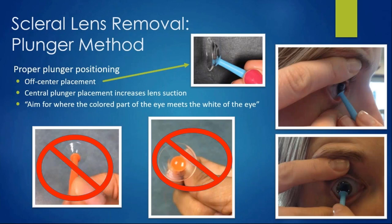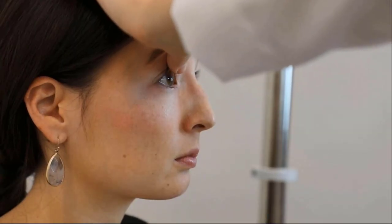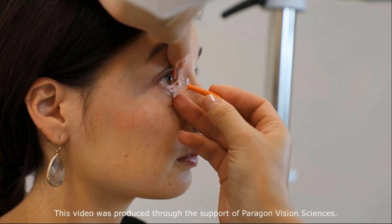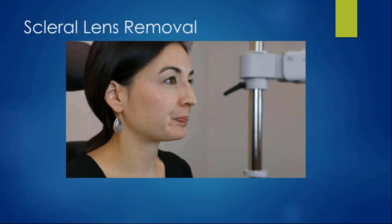For lens removal, the biggest mistake is going right in the center of the lens. Always do off-center placement. Wet the small removal plunger tip with saline such as Unique pH or whatever you're using. Go right to the edge of the lens, around four to six o'clock at the bottom. Press slightly in, wiggle, and pull it off the eye—right where the colored part of the eye meets the white part. If you go in the center, you won't break the suction. A demonstration shows placing the plunger right at six o'clock, breaking that seal, and removing the lens cleanly without scraping the eye.